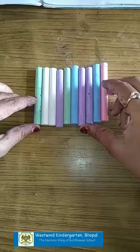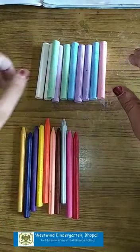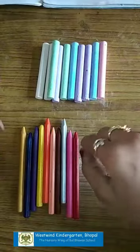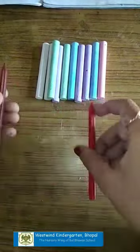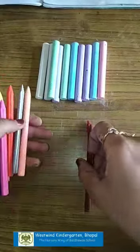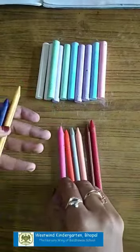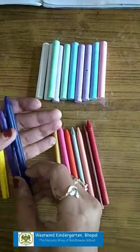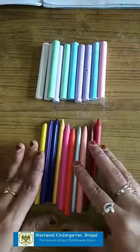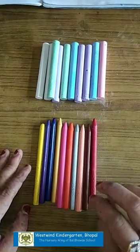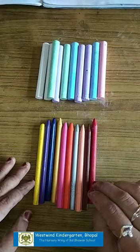So today we are going to write the spelling of 10 in our maths notebook. See what I have? I have so many crayons in my hand. So let's count them one by one. 1, 2, 3, 4, 5, 6, 7, 8, 9 and 10. I have 10 crayons.